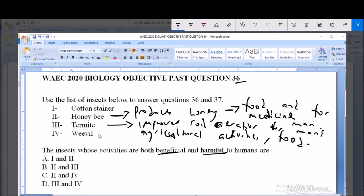And then weevil is not known to have any benefits. So it is only harmful as a storage pest for the crops harvested by man. So from what we have seen here, the honeybee and the termites have both benefits and are also harmful to humans. So 2 and 3. 2 and 3 is option B, which is the correct answer to this question.